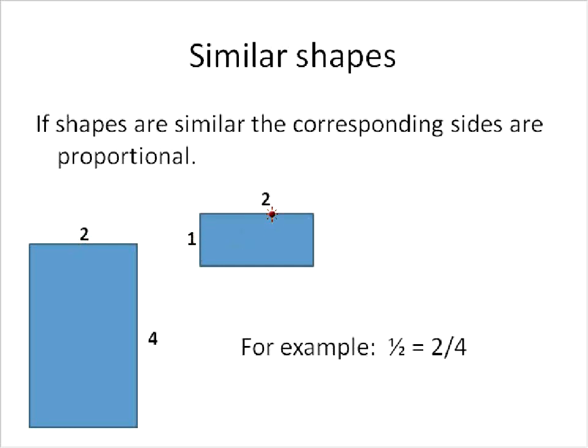So 1 to 2 is equal to 2 to 4, just like in this here example. So they are similar shapes when the sides are proportional to each other. And they have to be the corresponding sides, like this side to this side is equal to this side to this side.